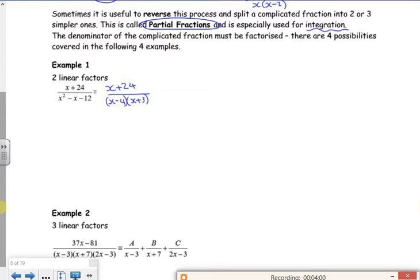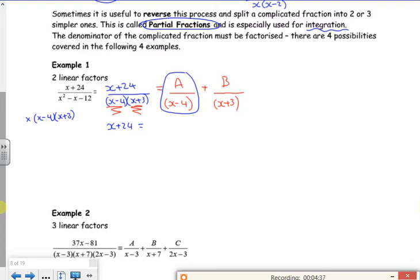So that's the same as A over x minus 4 plus B over x add 3. If I multiply both sides by x minus 4 times x plus 3 on the top, it cancels off the left hand side and I'm just left with x plus 24. If I times this fraction here by x minus 4 times x plus 3 on the top, the x minus 4s cancel and I just end up with A lots of x plus 3. If I look at this one here, if I multiply it by x minus 4 and x plus 3, then the x plus 3s cancel and I'm just left with B lots of x minus 4.